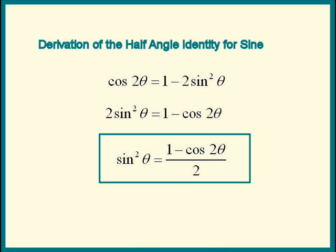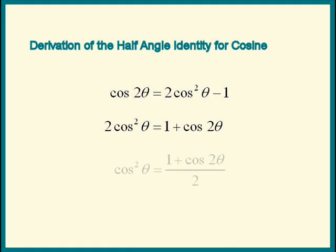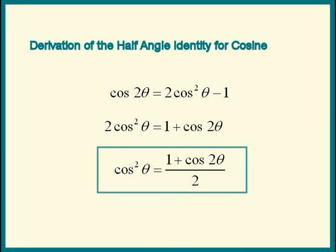Let's derive the half-angle identity for cosine next. We'll solve cosine squared theta in terms of cosine 2 theta. Moving the terms around, we get 2 cosine squared theta equals — move the 1 to the other side — 1 plus cosine 2 theta. Divide both sides by 2. We find that cosine squared theta equals 1 plus cosine 2 theta divided by 2. And that's the half-angle formula that we'll use.